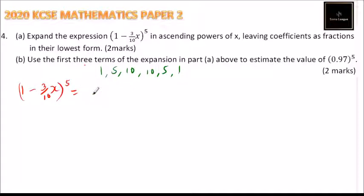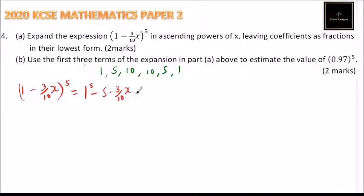This is equal to: we start with 1 raised to the power of 5, that will remain as 1. Because the sign here is alternating, we use minus. The coefficient is 5, and 1 raised to the power of 4 makes no difference, so we put 3 over 10 x raised to the power of 1. Then we have plus 10, multiplied by 3 over 10 x raised to the power of 2.